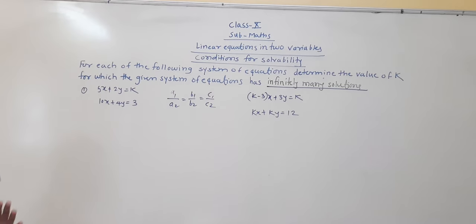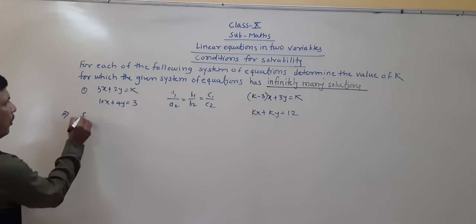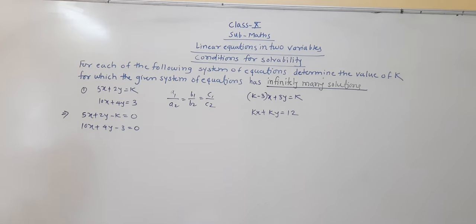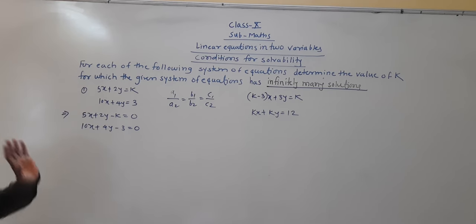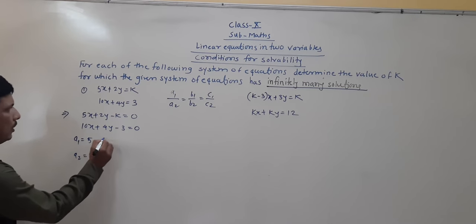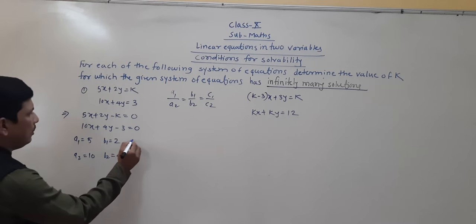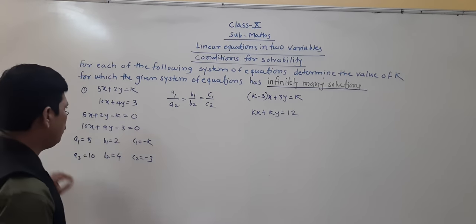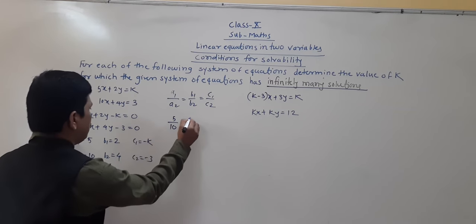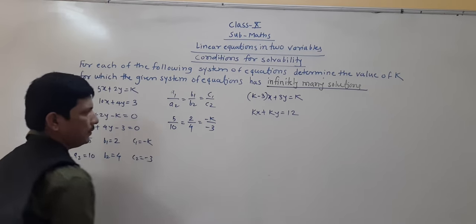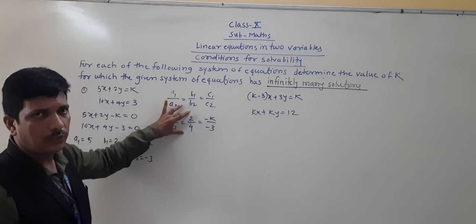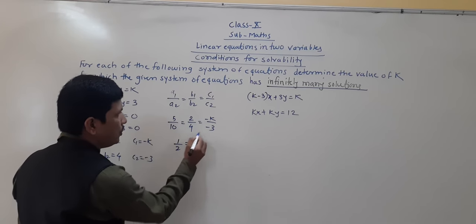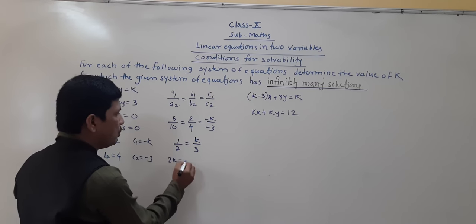First we write in proper form: 5x plus 2y minus 3 is equal to 0, and 10x plus 4y minus k is equal to 0. So a1 is 5, a2 is 10, b1 is 2, b2 is 4, c1 is minus 3, c2 is minus k. Since there are infinitely many solutions, a1 by a2 equals b1 by b2 equals c1 by c2. So 5 by 10 is equal to 2 by 4, which equals minus 3 by minus k.